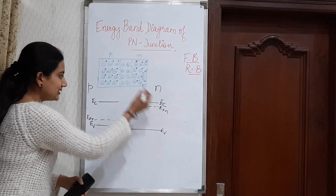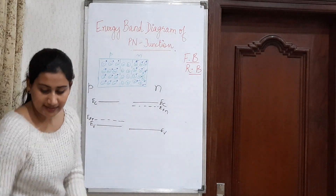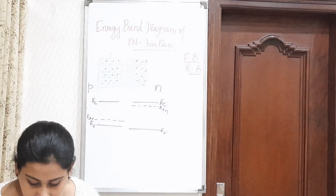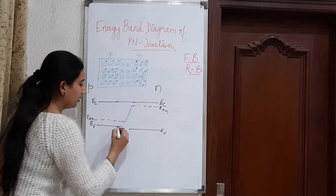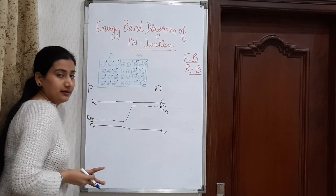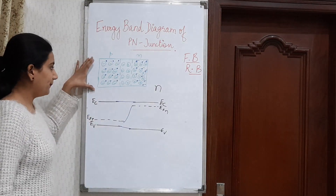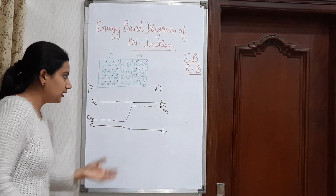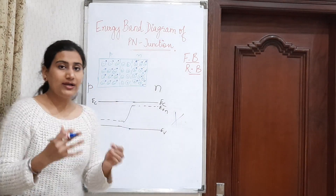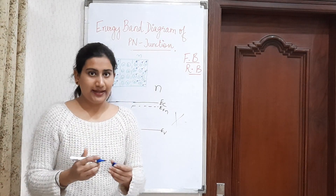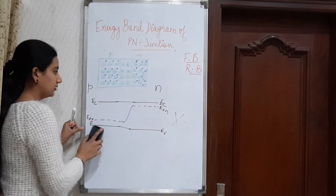But actually, if I join these energy levels, I get this form — this energy band diagram for P-N junction diode. But actually, this is wrong. So what is the actual diagram and why is the result that, not this? Let's see.